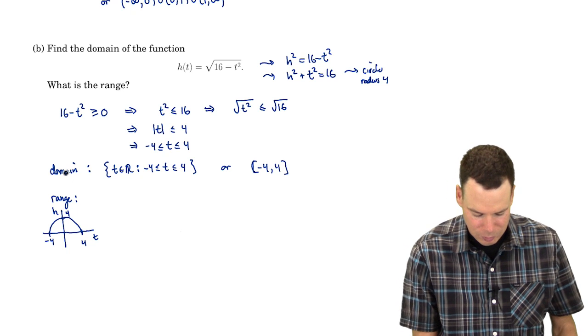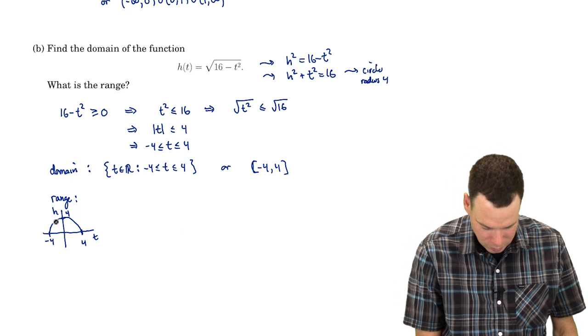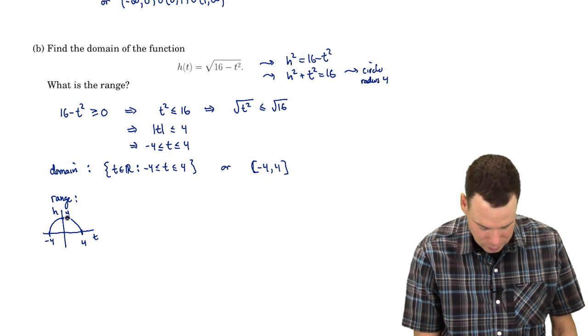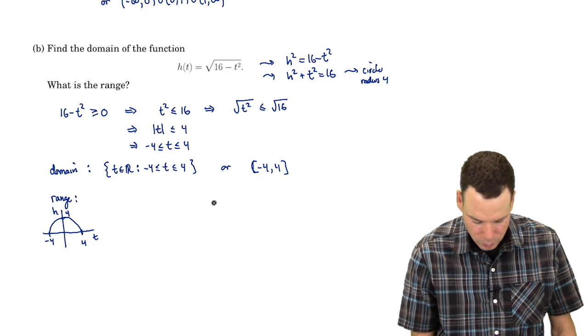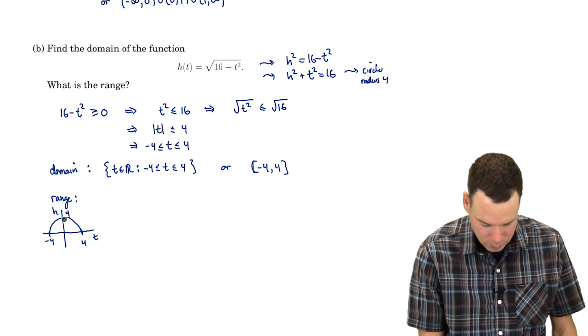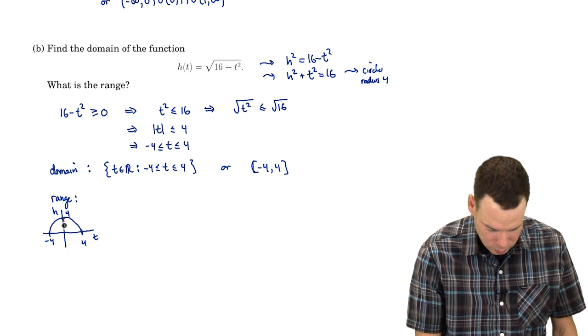It goes from -4 to 4 horizontally and up to 4 vertically. We can see why the domain is -4 to 4, because that's where the function is defined. What's the range? It would be all the values that get hit.